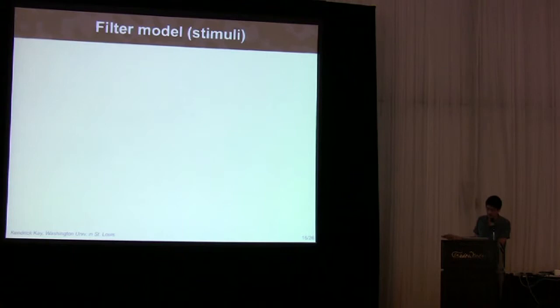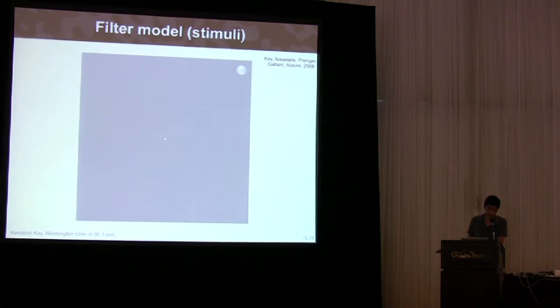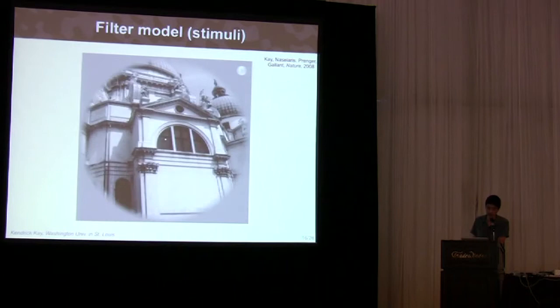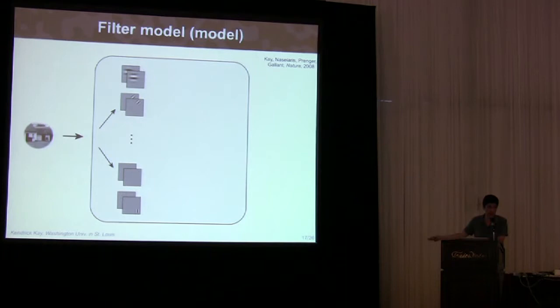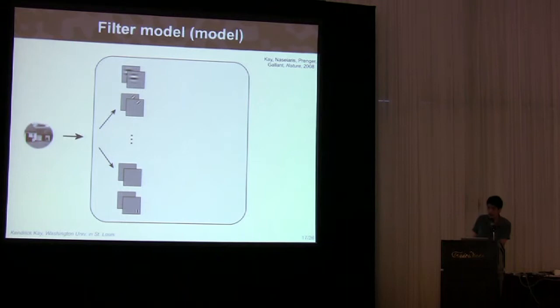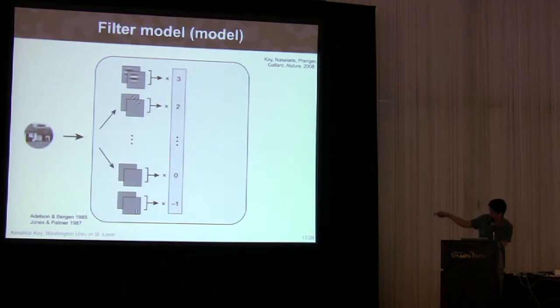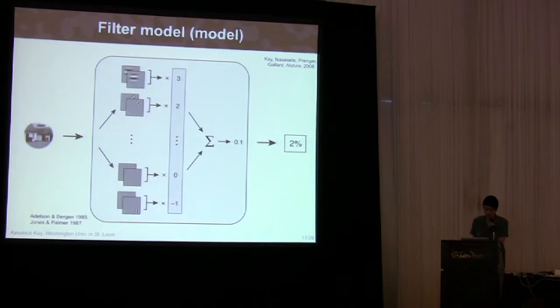So, the first model is a filter model. To develop that model, we conducted this experiment in the MR scanner. Subjects simply fixated the center, and we presented a series of grayscale natural photographs. We presented a large number of these. Then we asked, given the responses observed at each individual voxel, can we come up with a general predictive model? Here's the model we developed, a simple model based on V1 conceptions. We start with the image, apply a bank of filters. Filters occur at different positions, spatial scales and orientations. Each filter is computing a weighted sum of the image. Filter outputs are squared, summed and square rooted, which is the standard V1 complex cell energy model. We then take these filter outputs, apply a set of weights and sum to give the predicted response. These filters were fixed, and what we're estimating are the optimal set of weights to describe each individual voxel.